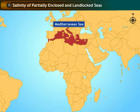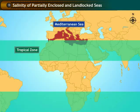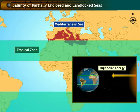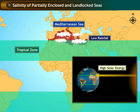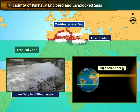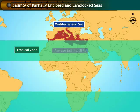The Mediterranean Sea, located in the tropical region, receives a good amount of sunlight. However, both the rainfall and the supply of river water are low. The average salinity of this sea is 39 parts per thousand.